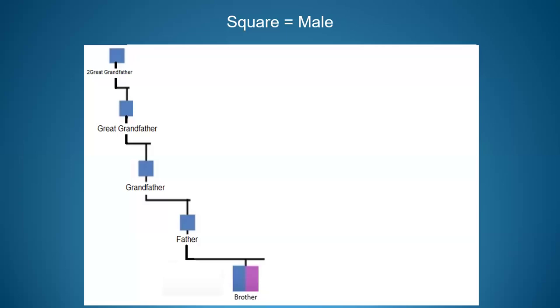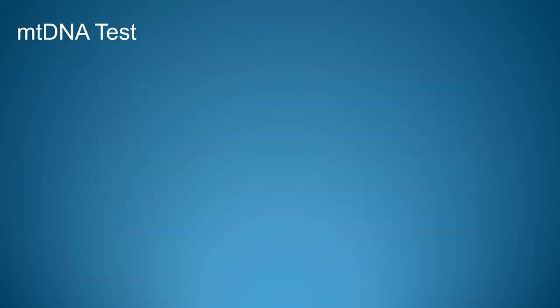Looking at the family chart again — males imagine you are the square at the bottom that says 'brother.' We can see what the Y-DNA test traces: it goes through his father's, father's, father's, father's line, going back hundreds and hundreds of years.